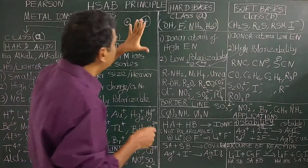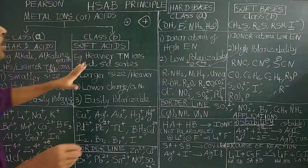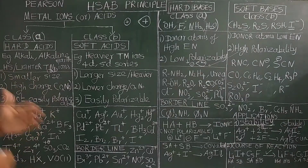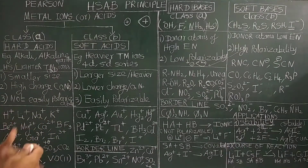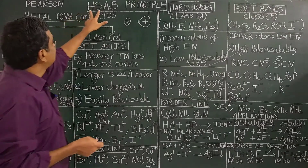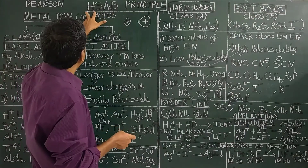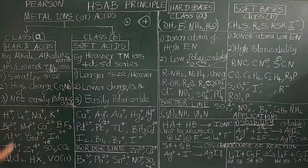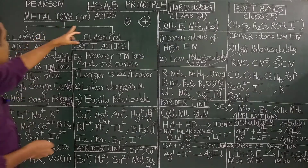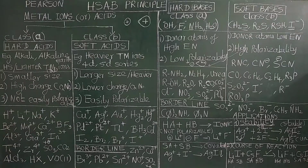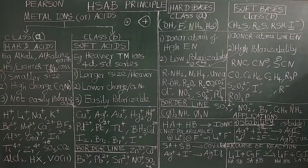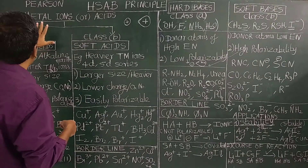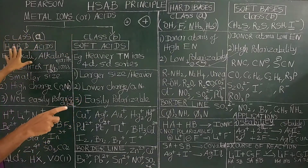This simple rule was proposed by Pearson based on the stability of the complexes formed between metal ions and ligands, or cations and anions. According to Pearson, metal ions are classified into two types: Class A and Class B. Class A metal ions are called hard acids.